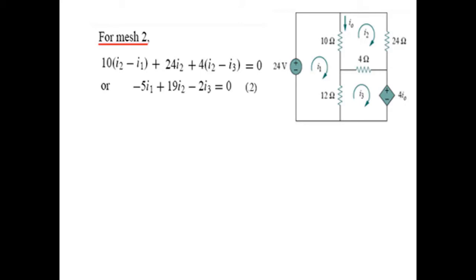Now let's go into mesh number 2. Again we start from the left corner, and since we are in mesh number 2, we write I2 first: 10(I2 minus I1), then 24 times I2, then 4(I2 minus I3), because they're in opposition, so 4(I2 minus I3) equals zero. By simplifying, we get the second equation.